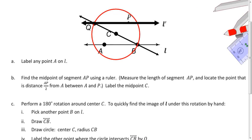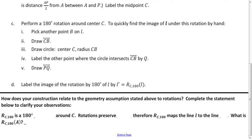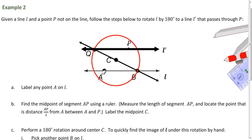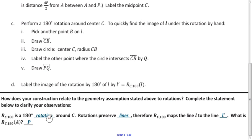Now we have a line through P. We have a rotation whose pre-image is line L. Rotations preserve lines, so L maps to L prime. And importantly, point A gets mapped to point P under this rotation.